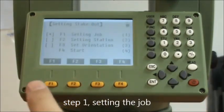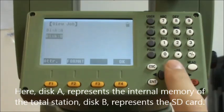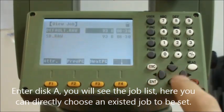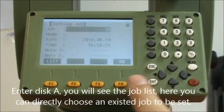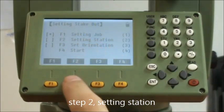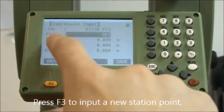Step number one, setting the job. Press list enter display. You will see the job list here. You can directly choose an existed job to be set. Step number two, setting station. Press F3 to input a new station point.